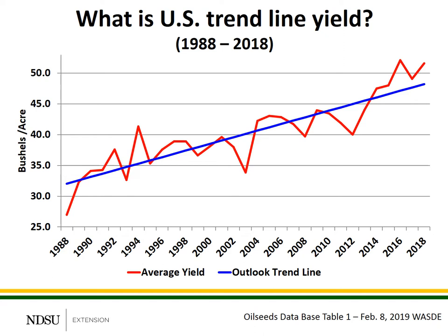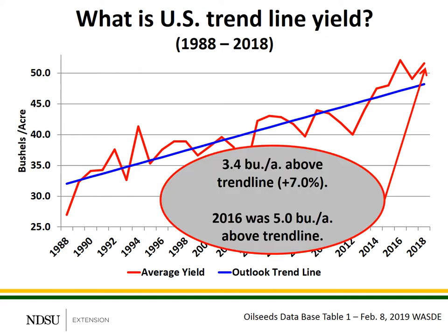This figure shows the national average soybean yield in the U.S. from 1988 through 2018. That's the red line that bounces around through the middle of the graph. The straight blue line that runs up diagonally is the trend line yield — think of the trend line yield as the average yield that's been adjusted for technology. When we compare the national average soybean yield of 51.6 bushels per acre relative to trend line, that's about 3.4 bushels above average, or approximately 7%. The last five years in a row, our national average yields have been above trend line, with 2016 being five bushels above trend line.